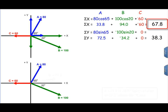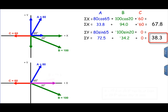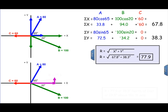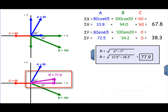The sum of the x components, 67.8, is represented by the vector here, and the value for the sum of the y components, 38.3, is represented by this vector. These are the two legs of a right triangle, so we can define the resultant using the Pythagorean theorem: the square root of the sum of the x's squared plus the sum of the y's squared. We get a value of 77.9 for the resultant.